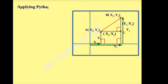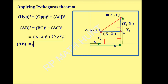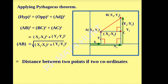Applying the Pythagoras theorem: hypotenuse² = opposite² + adjacent². So AB² = BC² + AC² = (x2 − x1)² + (y2 − y1)². Therefore, AB = √[(x2 − x1)² + (y2 − y1)²]. The distance between two points, given two coordinates, is AB = √[(x2 − x1)² + (y2 − y1)²].